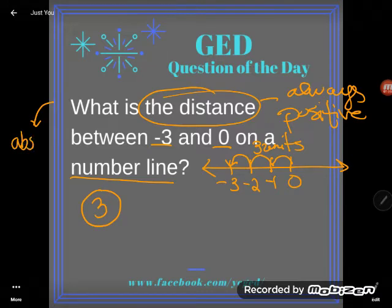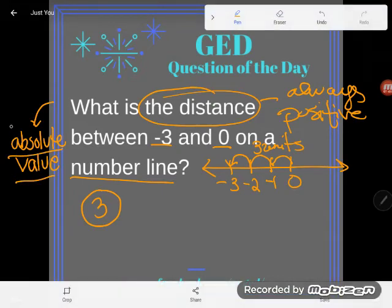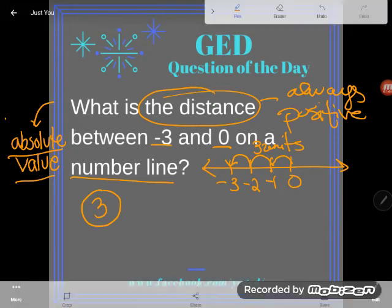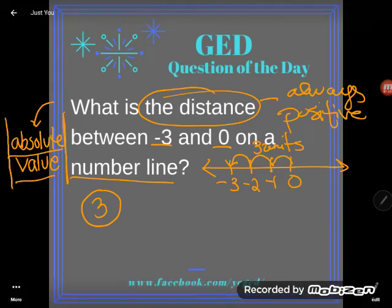What is absolute value? Well, it's just this. It's exactly that. It is the distance between a number and zero on a number line. And absolute value symbolically is done with these up and down bars.